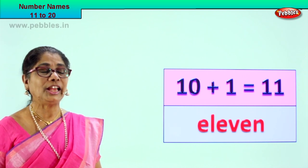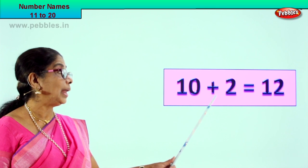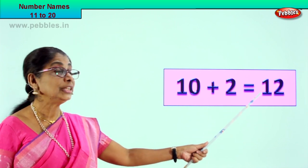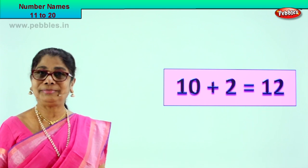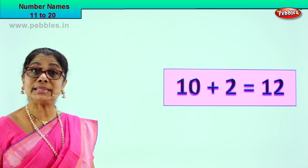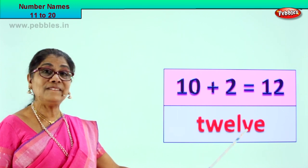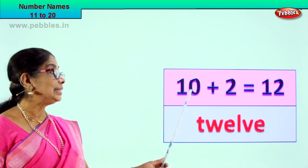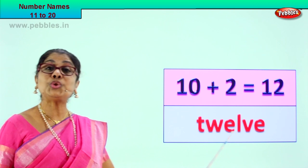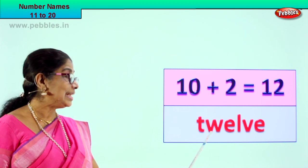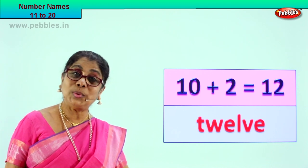Shall we take our next exercise? Good! Look what we have here. 10 plus 2 is equal to 12. 10 plus 2 is equal to 12. And we learn to write in words 12 — T, W, E, L, V, E. 12 in words. Good!